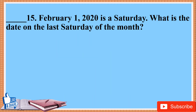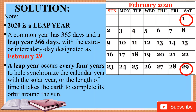15. February 1, 2020 is a Saturday. What is the date on the last Saturday of the month? Note: 2020 is a leap year. A common year has 365 days and a leap year has 366 days, with the extra intercalary day designated as February 29th. A leap year occurs every four years to help synchronize the calendar year with the solar year.